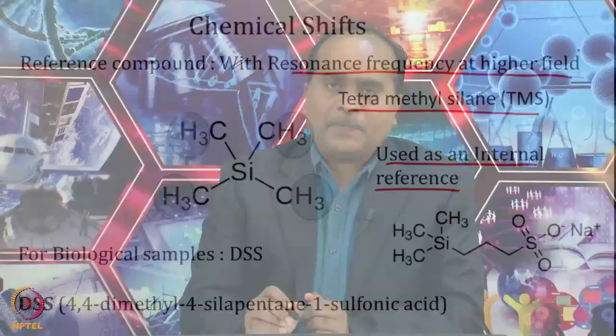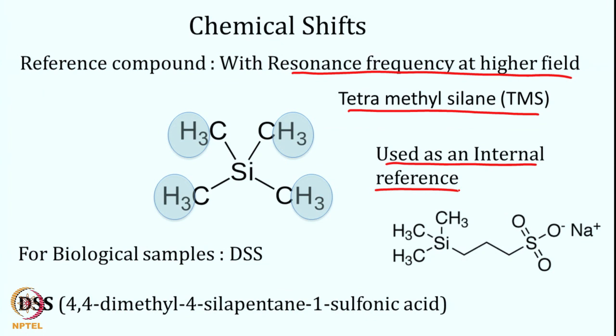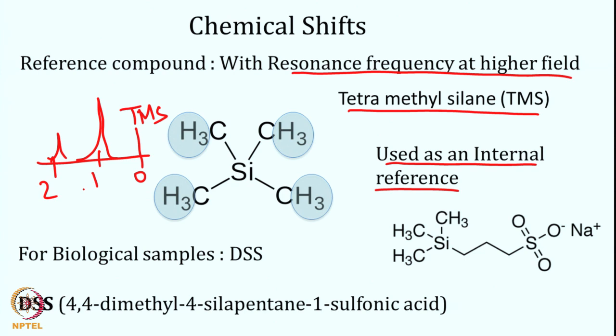TMS is an internal reference, added to the sample. However, TMS can be dissolved in many organic solvents but is not very soluble in water. Therefore, for protein experiments TMS is not preferred. Instead, we use DSS — a sodium salt of a similar moiety — which also has CH3 groups. DSS is 4,4-dimethyl-4-silpentane-1-sulfonic acid, which is water soluble and used in protein samples as an internal reference.